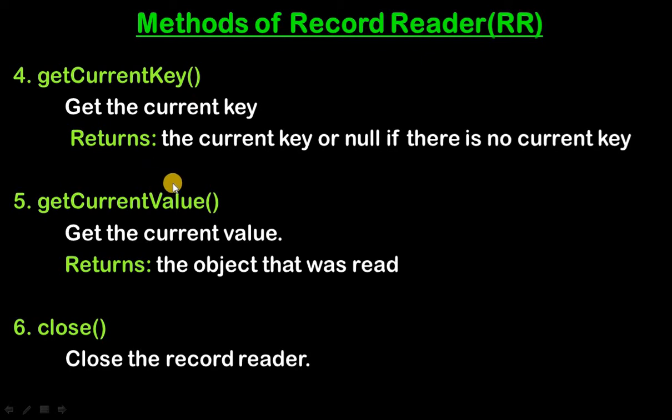So Record Reader is an interface class and it has six abstract methods that we need to implement.